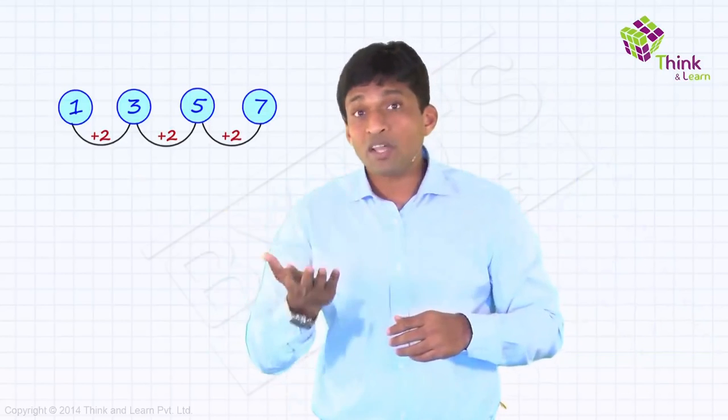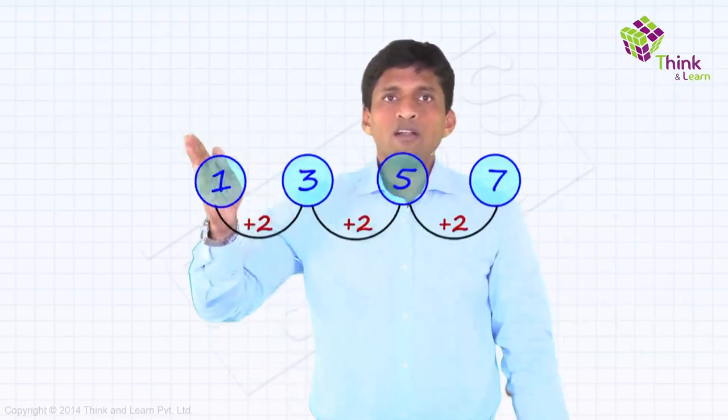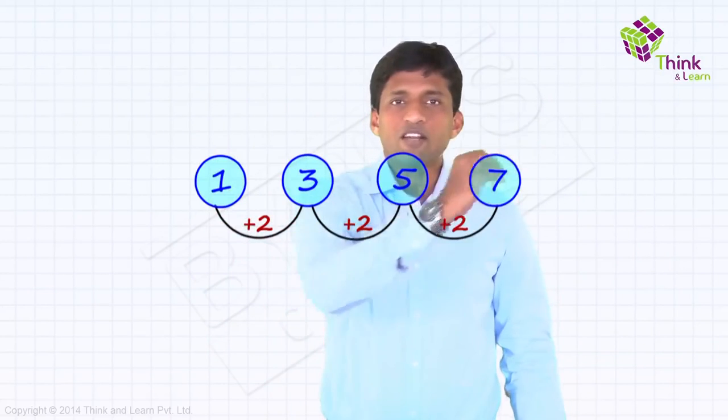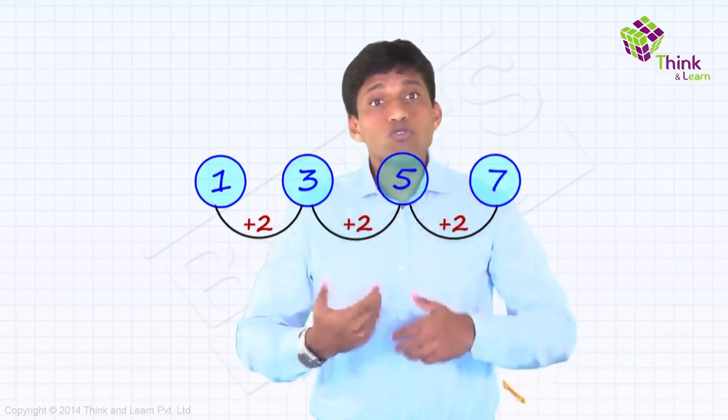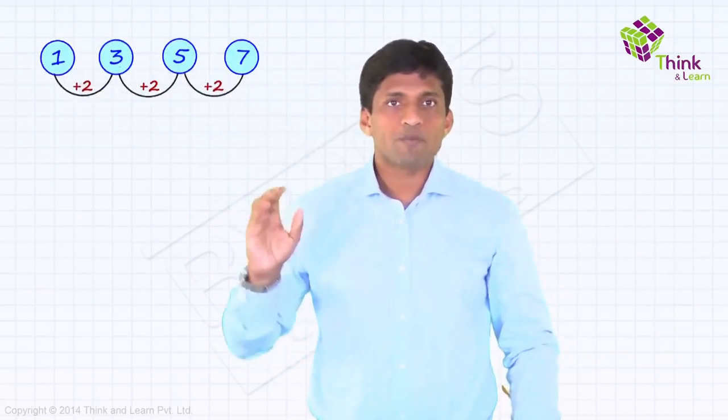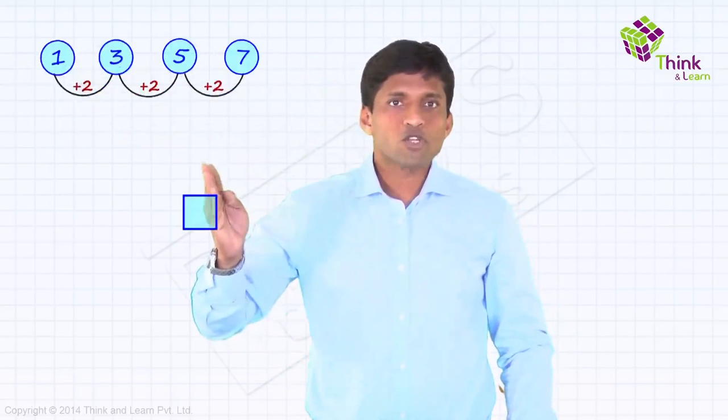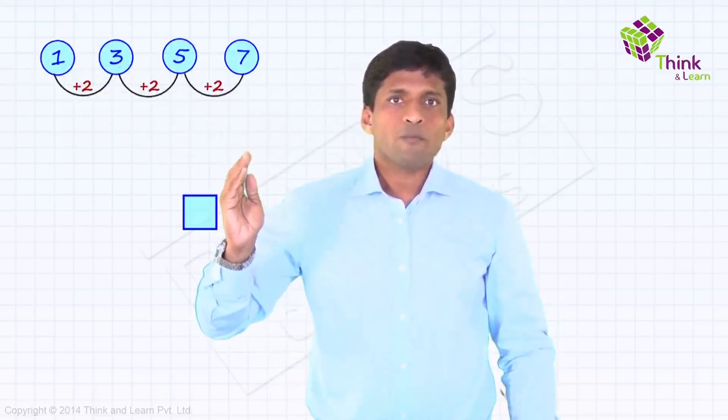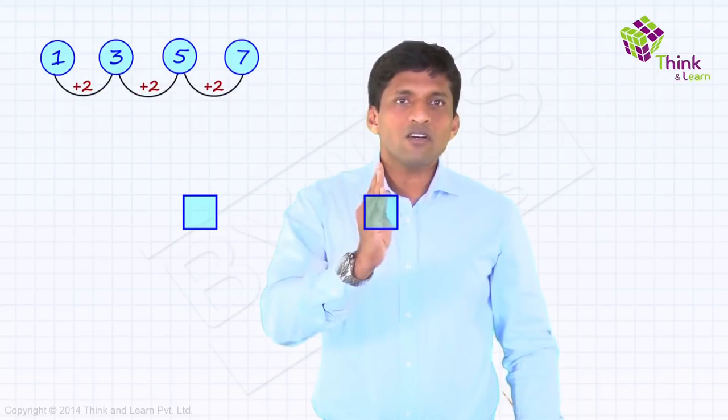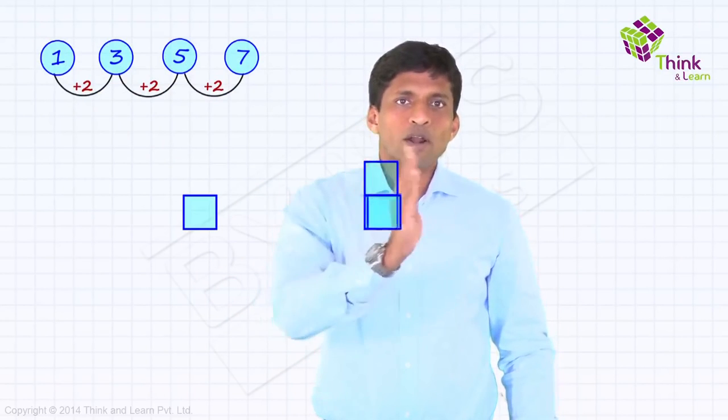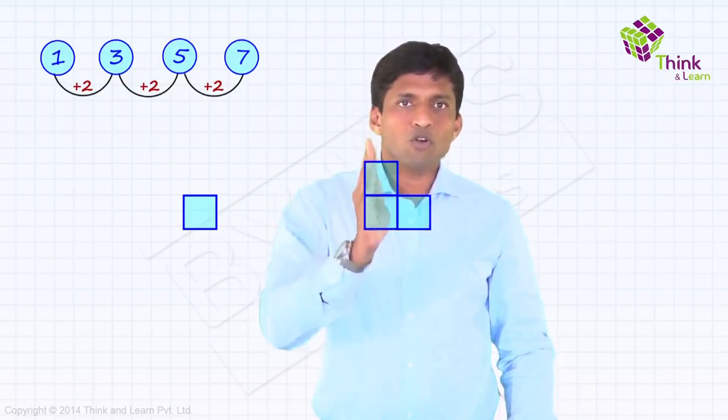So, we just visualized 1, 3, 5, 7. If I am using squares to visualize 1, 3, 5, 7, let's try visualizing using squares. Again, it's interesting. So, take a square, unit square. So, that's 1. Now, bring that here. Add 1 on top, 1 to the side. That's 1, 2, 3.